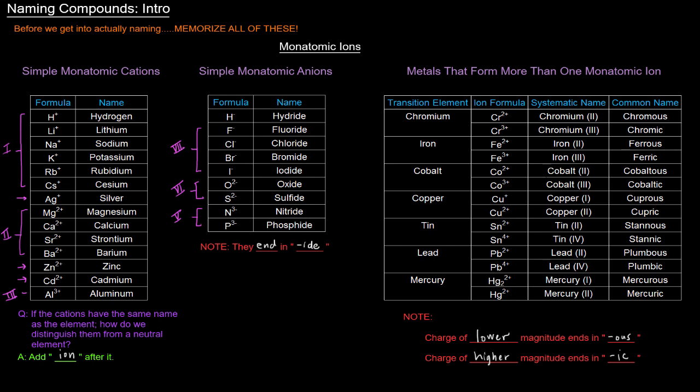But the rest, you should be able to figure out if you just keep in mind the charge and the systematic name, and the idea that us is the lower magnitude and ick is the higher magnitude. A lot of people are actually moving away from using the common names because they're not as explicit as the systematic names. So that's the monatomic ions.